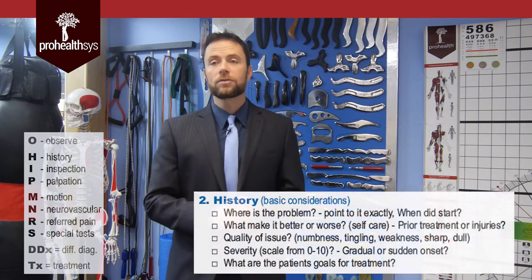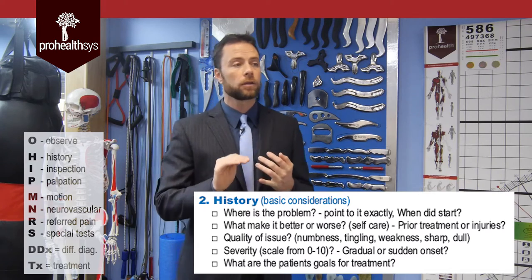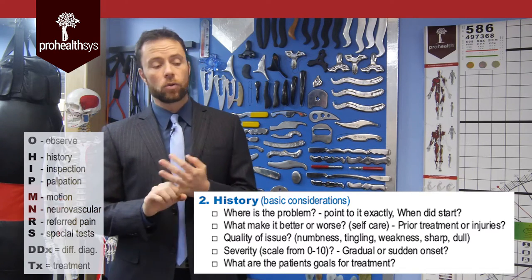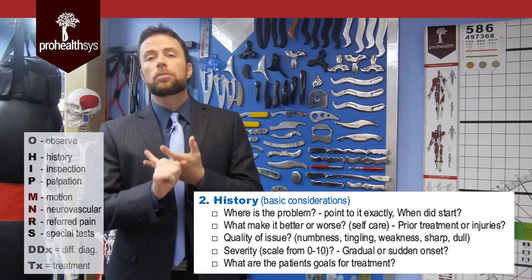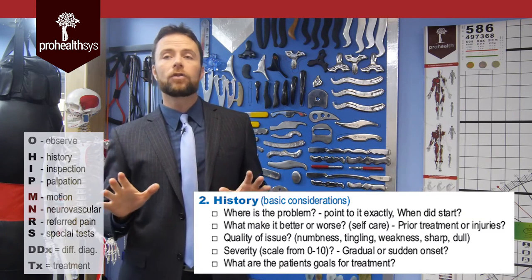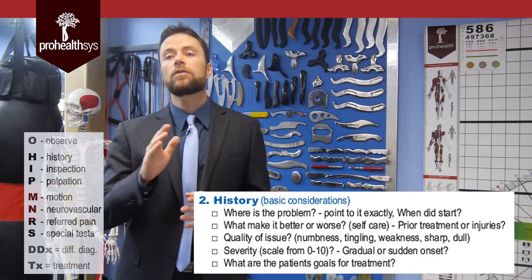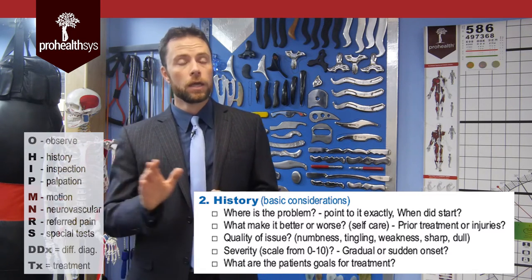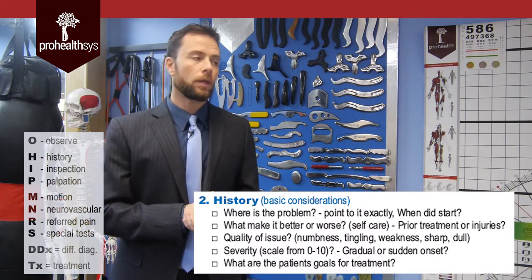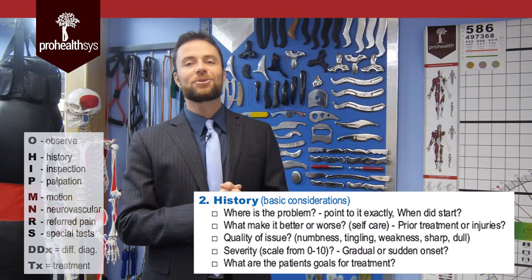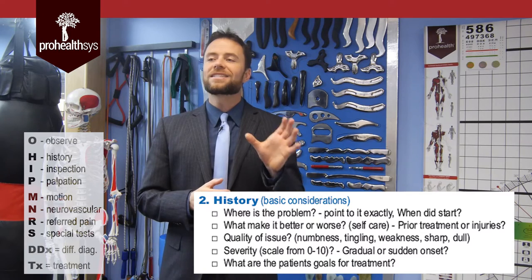Then we're going to progress into the history, and this is the most important part of any clinical exam. It doesn't matter if you are a massage therapist, athletic trainer, orthopedic surgeon, chirophysio — whatever it is. History gives you about 80 to 90% of your diagnosis, and this is in the literature everywhere. If you know the right questions to ask, patients will tell you what's wrong with them. One of the key things for history is there is a sign language of injury.